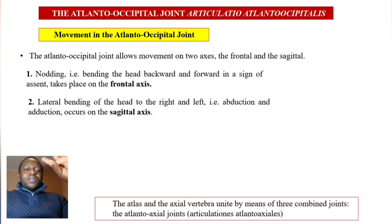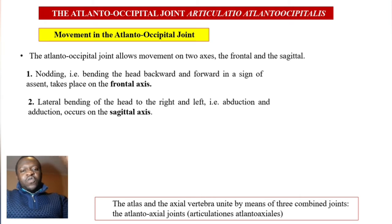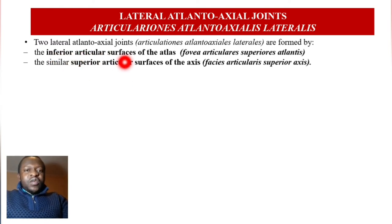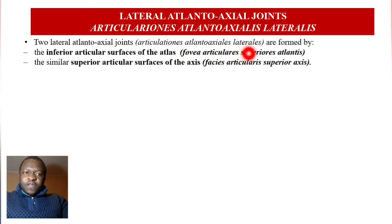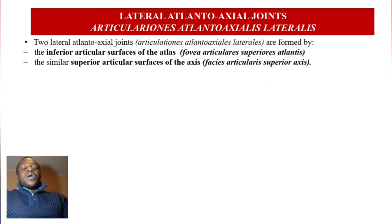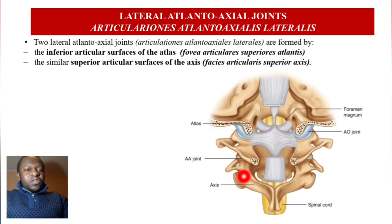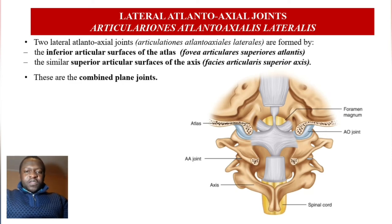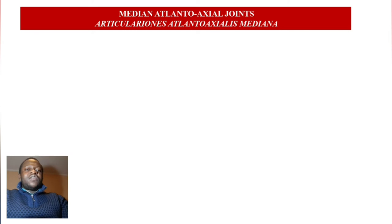C1 and C2 — the atlas and axis — unite by means of three combined joints: the atlantoaxial joints. There are two lateral and one median. The lateral atlantoaxial joints, articulationes atlantoaxiales laterales, are formed by the inferior articular surface of the atlas, fovea articularis inferior atlantis, and the superior articular surface of the axis, facies articularis superior axis. Looking at the image, the atlas and axis are shown with the joint between them. These are combined plane joints.